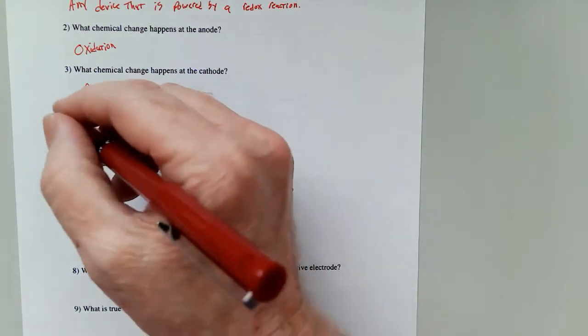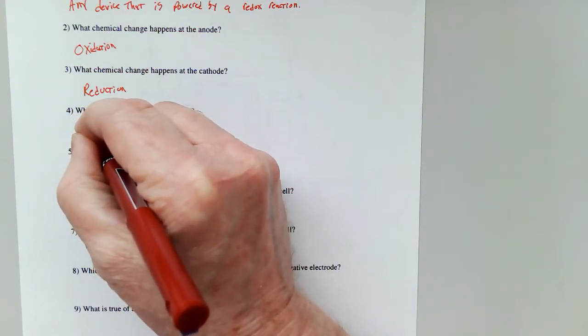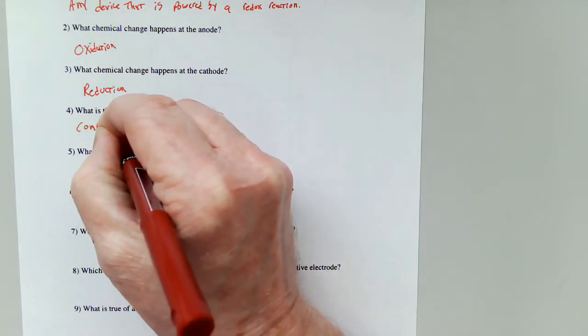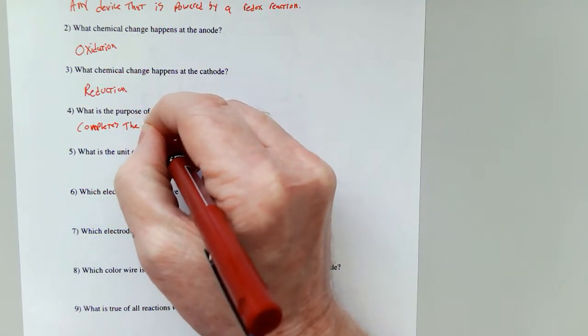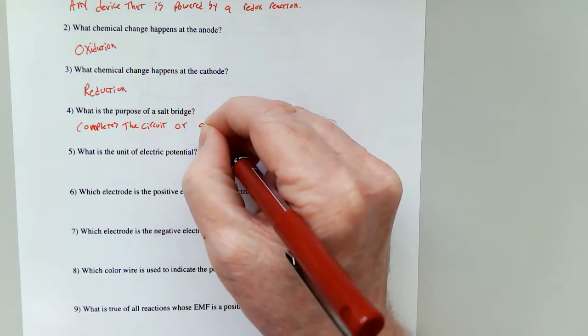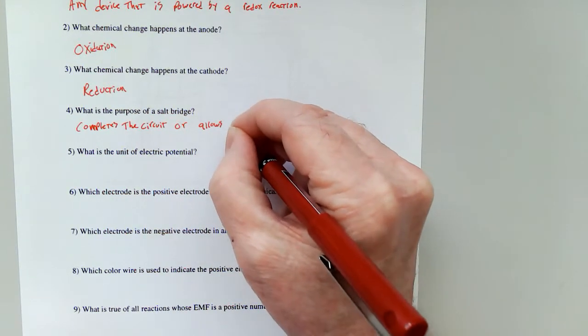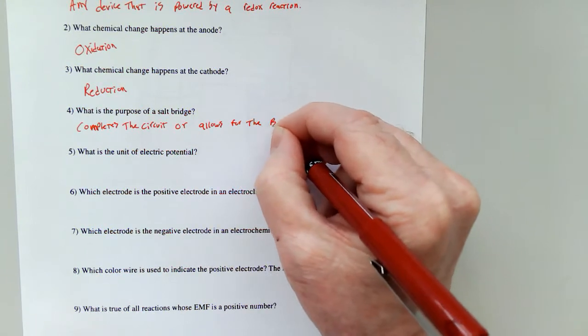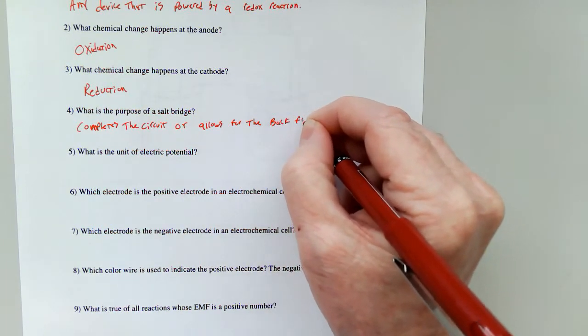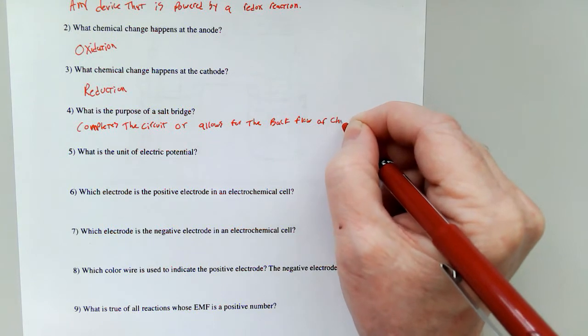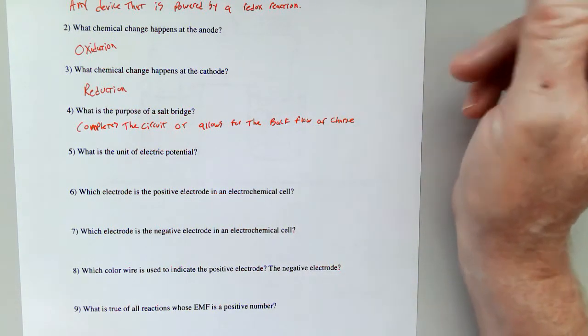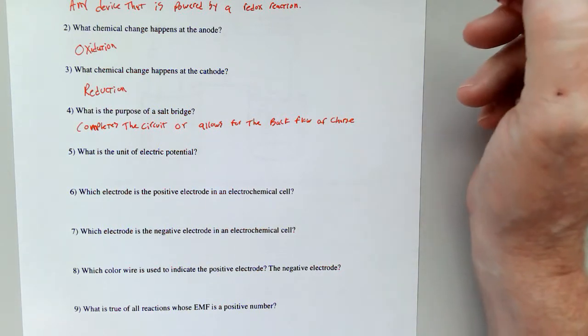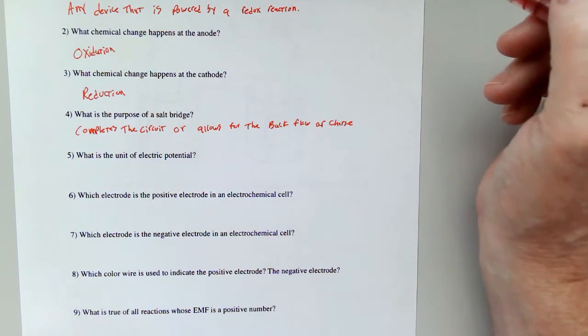What is the purpose of a salt bridge? It completes the circuit. It's kind of a physics answer. Or it allows for the backflow of charge. Do not say that it allows for the backflow of electrons. That is not accurate. And actually, that's the way I was taught. But it's not true. Electrons are not flowing through it. Just charge itself.